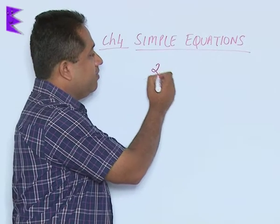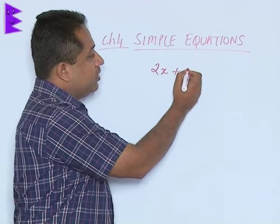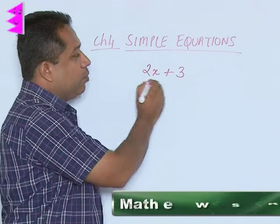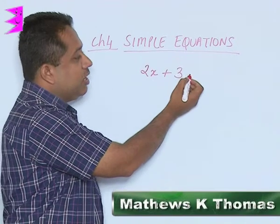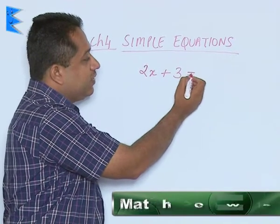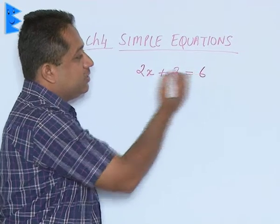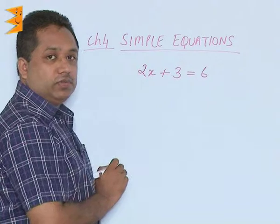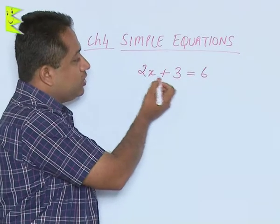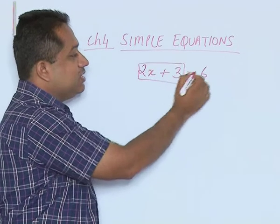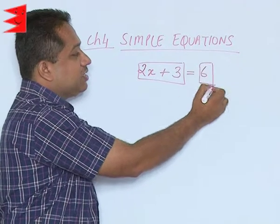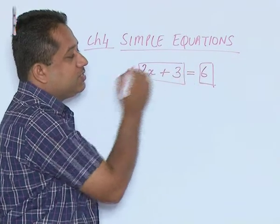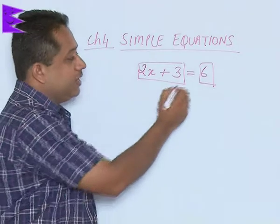Now we have 2x plus 3. At the moment it is not an equation because there is no equality sign. If I say it is equal to 6, then this can be written as an equation. This is an equation because there is a left side, so this is the LHS and this is the RHS, and both LHS and RHS are separated by an equality sign.